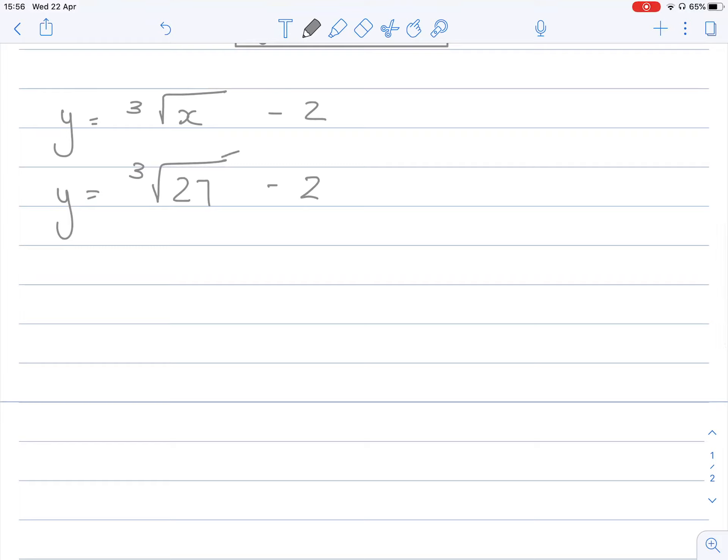Now, if you're not too sure, this is the same as saying what number times itself three times equals to 27. That's what a cube root means. It's basically the opposite of calculating a cube. So what number times itself three times gives you 27. It's not what number times by three. It's not the same.